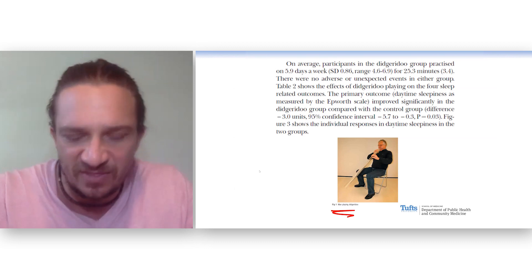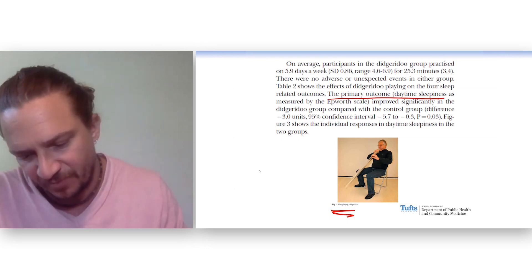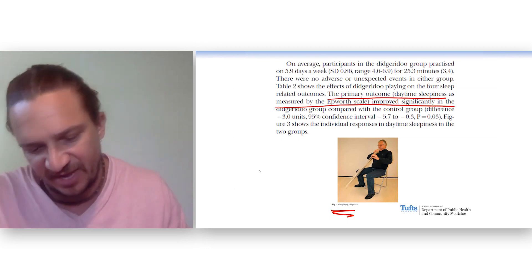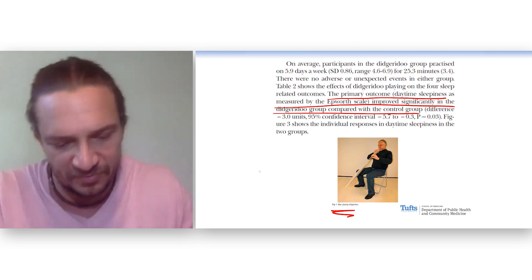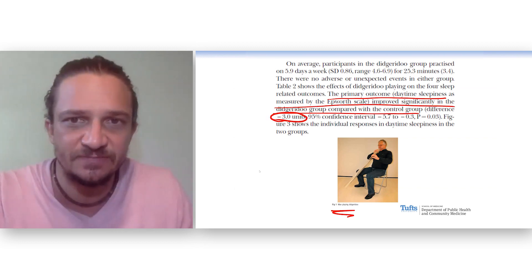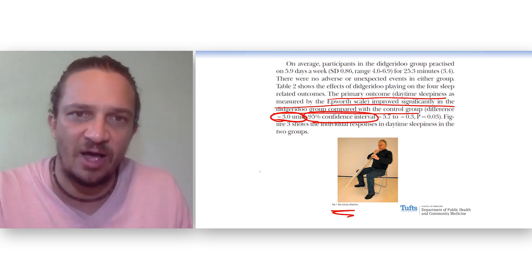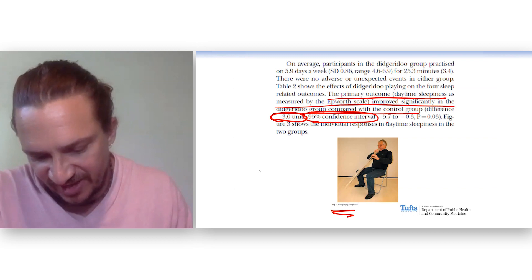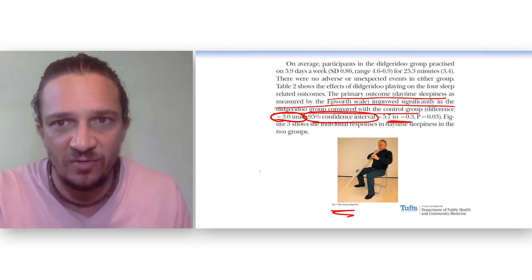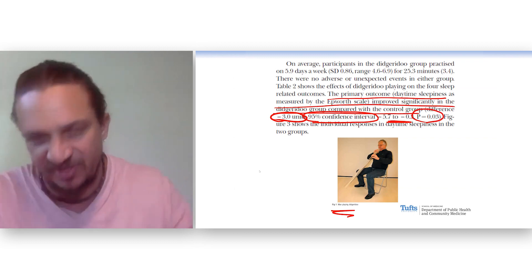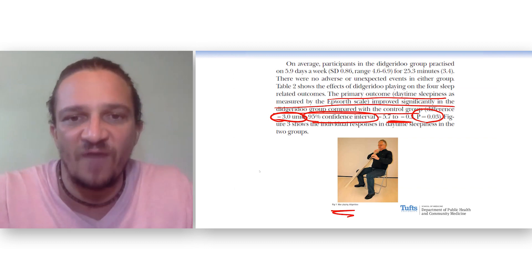So we see the primary outcome improved significantly in the didgeridoo group compared to the control group. And the difference is 3 units. They report the 95% confidence interval. Again, you can see that it does not include the null value, and so it must be statistically significant at the 0.05 level.